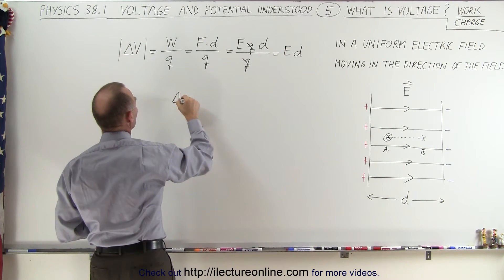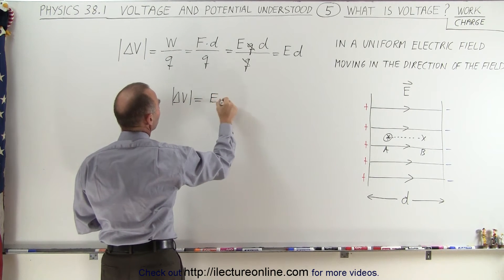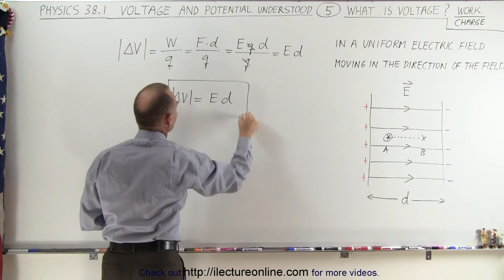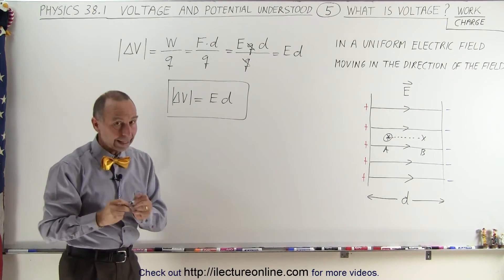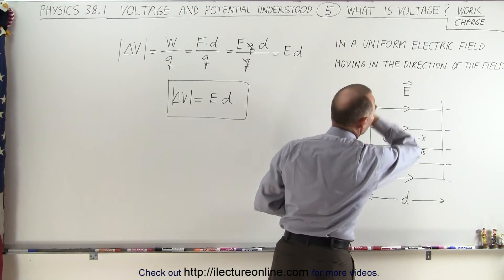So in other words, the change in the potential, the difference in the potential, will be equal to the strength of the field times the distance that we traveled. And this is assuming that the electric field is uniform and assuming that we're moving in the direction of the field.